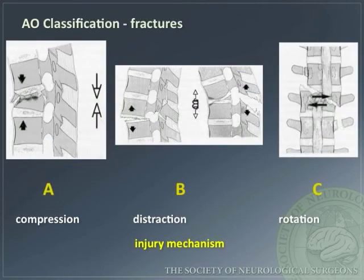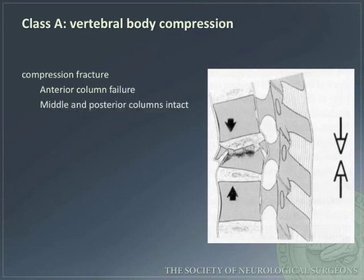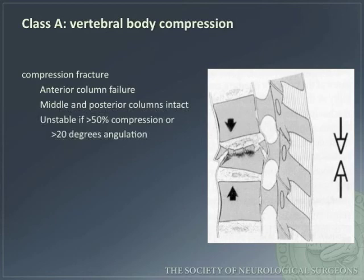Fractures in this region may be classified by mechanism of injury: A — compression, B — distraction, and C — rotation. Class A, vertebral body compression, may be divided into compression fractures and burst fractures. A compression fracture results from anterior column failure with the middle and posterior columns intact. It is unstable if there is greater than 50% compression or greater than 20 degrees of angulation.